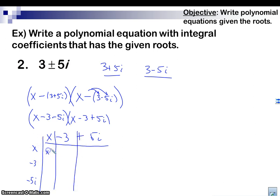So I'm going to do x squared, negative 3x, 5ix, negative 3x, positive 9, negative 15i. Okay, negative 5ix, positive 15i, and negative 25i squared.